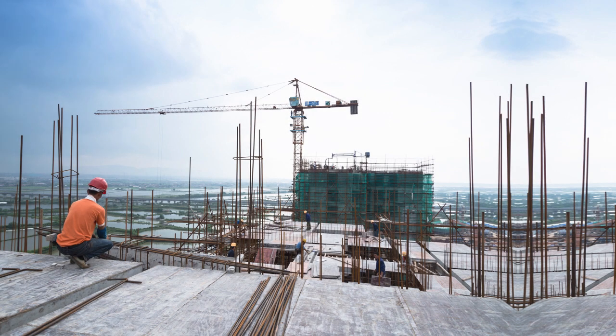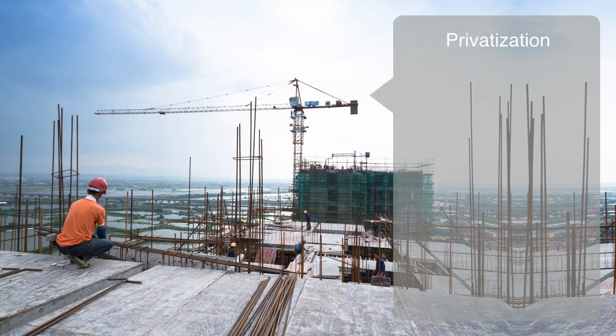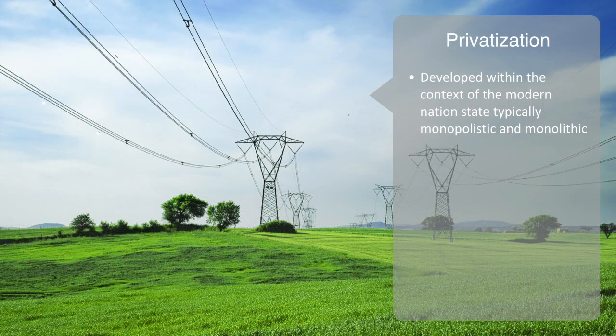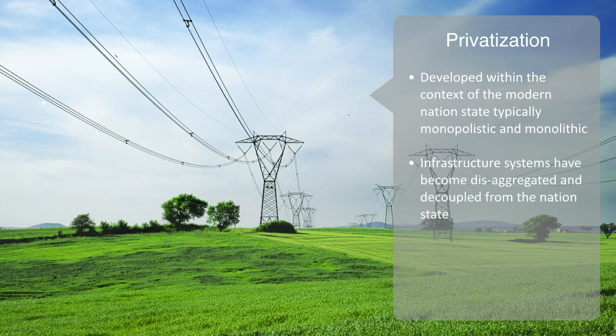Modern industrial economies and their infrastructure were developed within the context of the nation-state, and were typically monopolistic and monolithic, but globalization has driven the process of privatization within many post-industrial economies. From England to New Zealand, infrastructure systems have become disaggregated, decoupled from the nation-state, and increasingly reintegrated into global networks that are managed by multinational corporations. This is resulting in a much more complex landscape with many different actors, both private and public, as infrastructure systems such as the telecommunications and power grids of Western Europe no longer stop at borders, but increasingly form part of multinational networks composed of many different stakeholders.